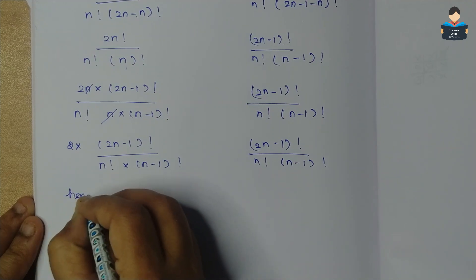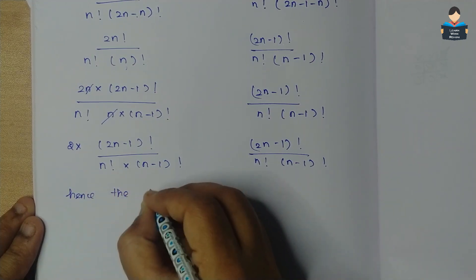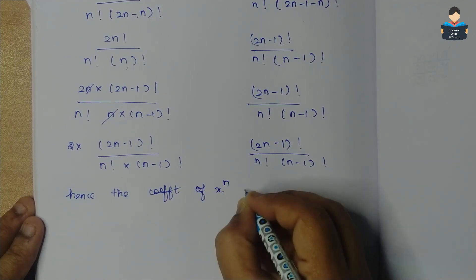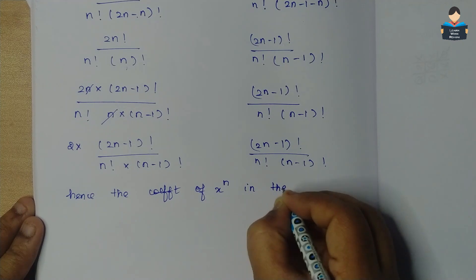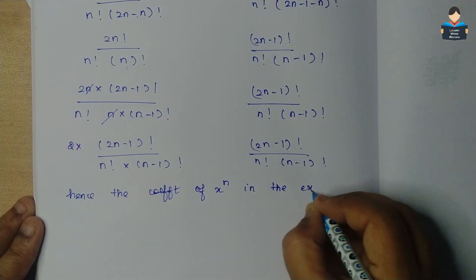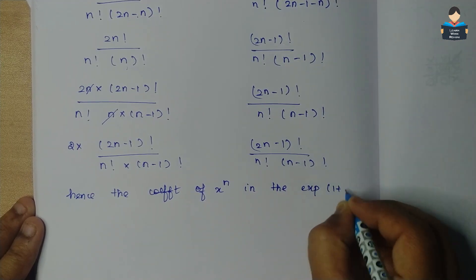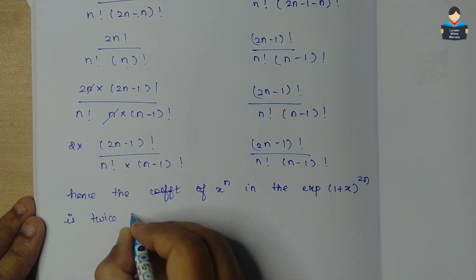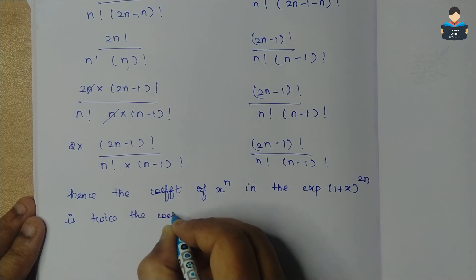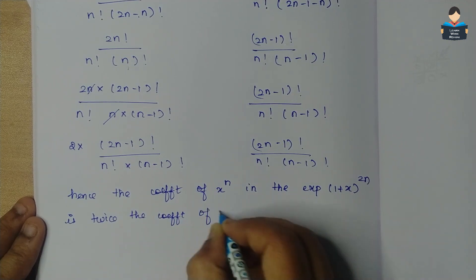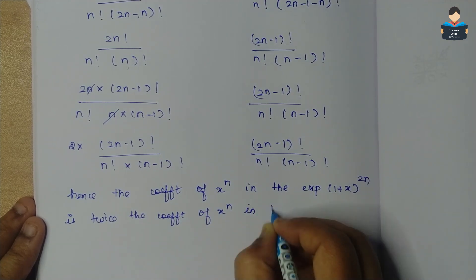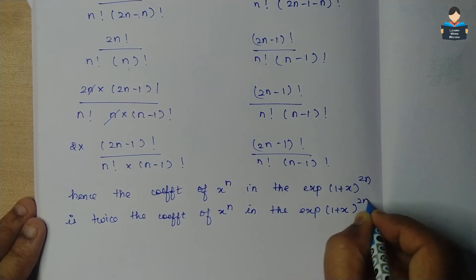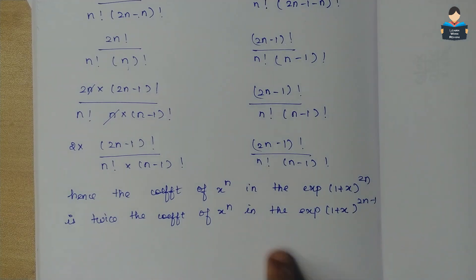Hence, the coefficient of x^n in the expansion of (1+x)^2n is twice the coefficient of x^n in the expansion of (1+x)^(2n-1). Hence proved.